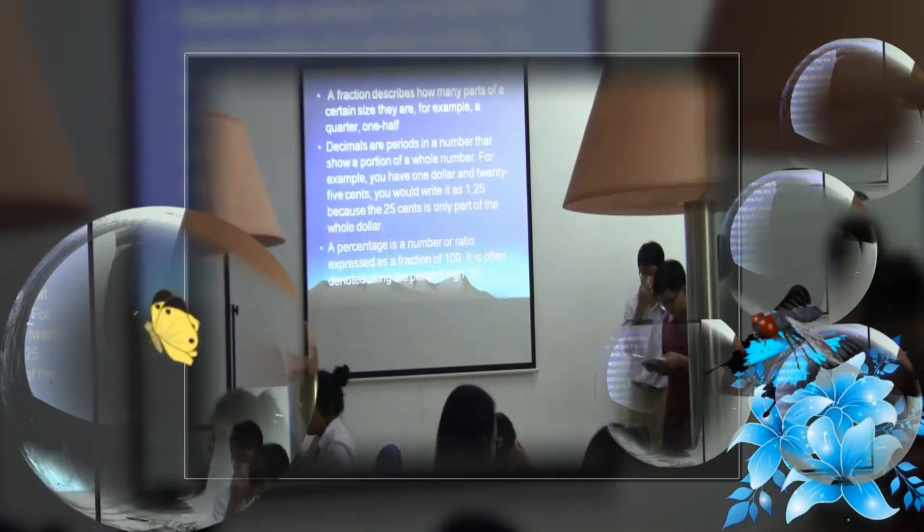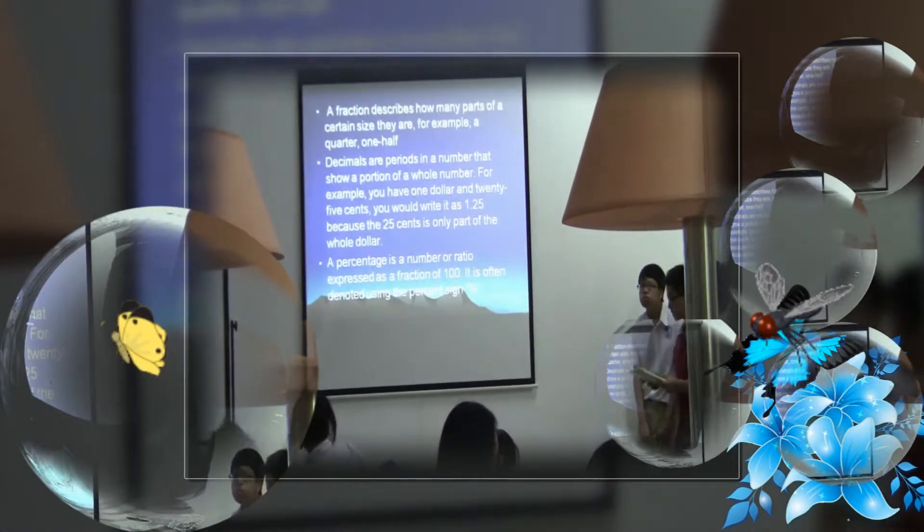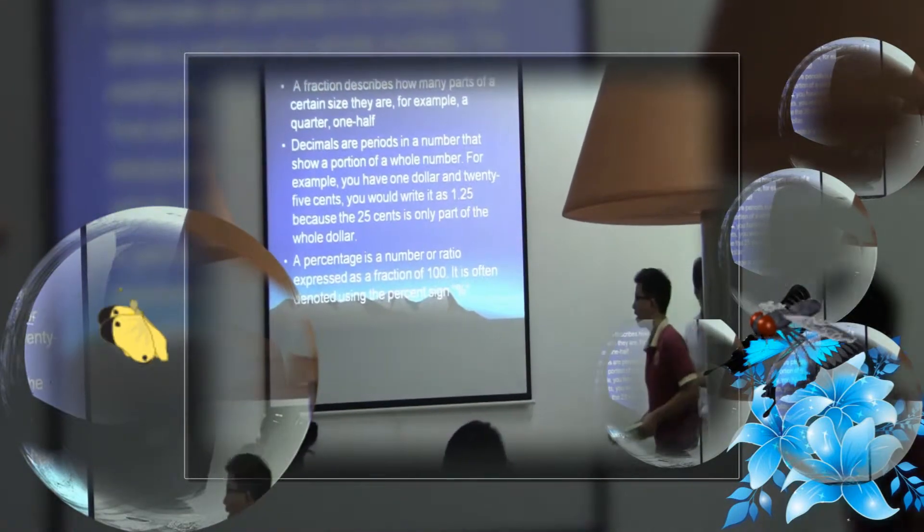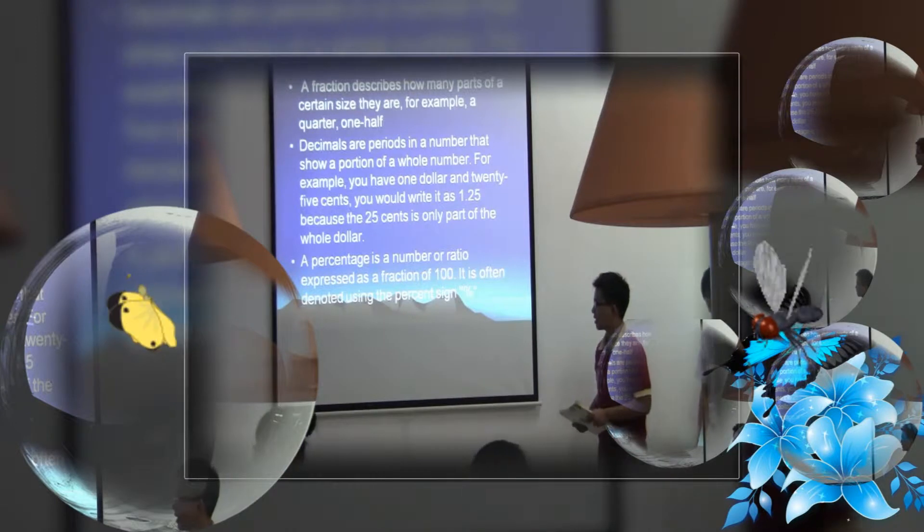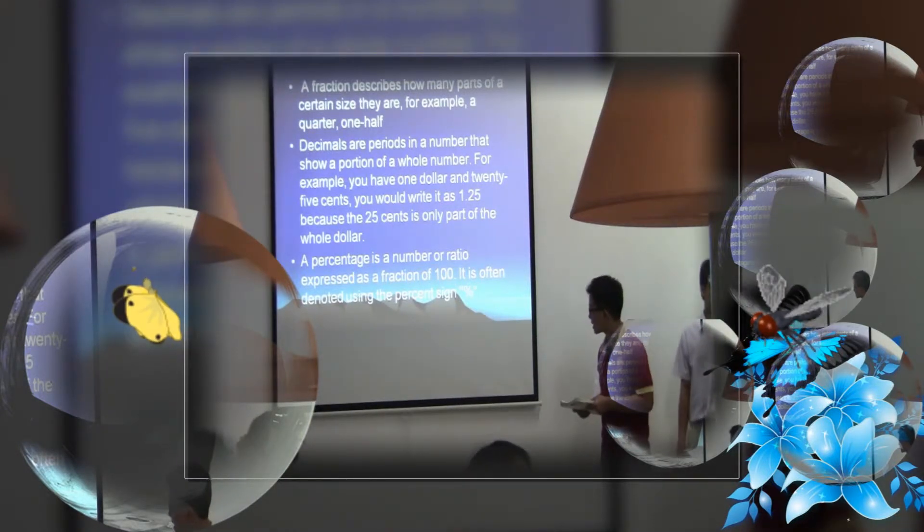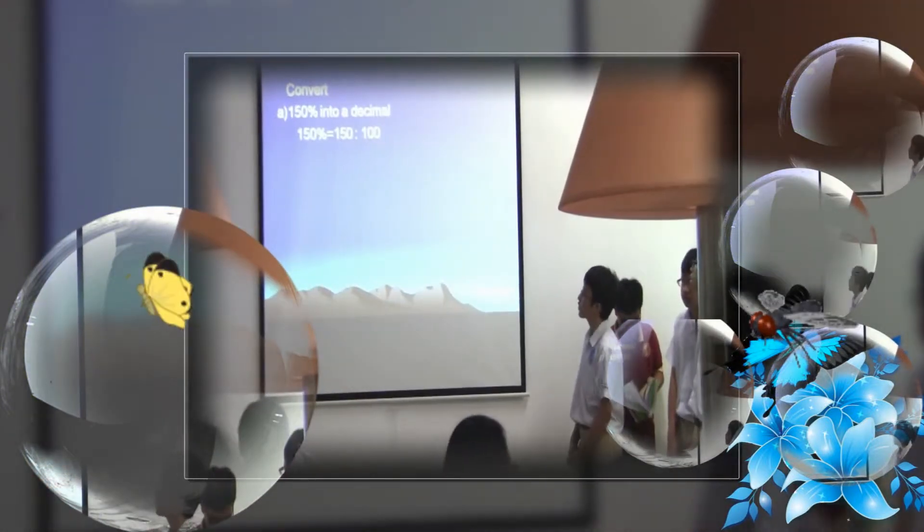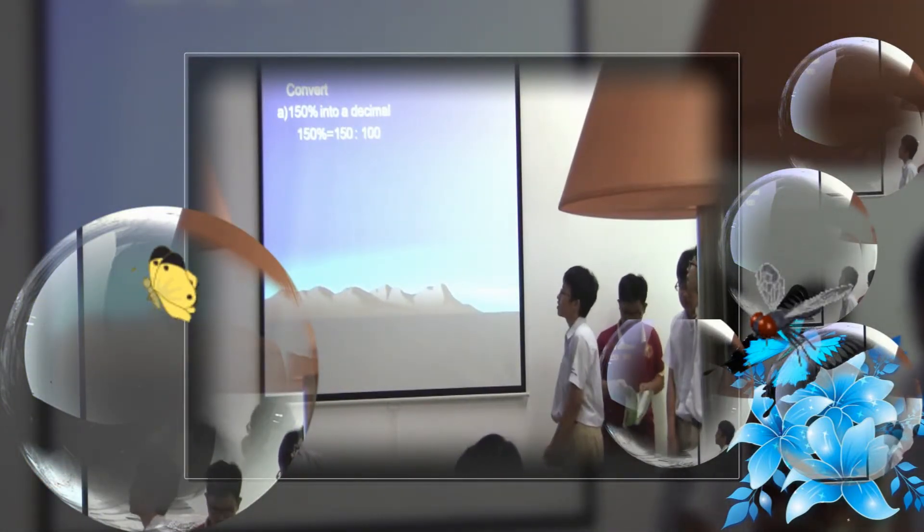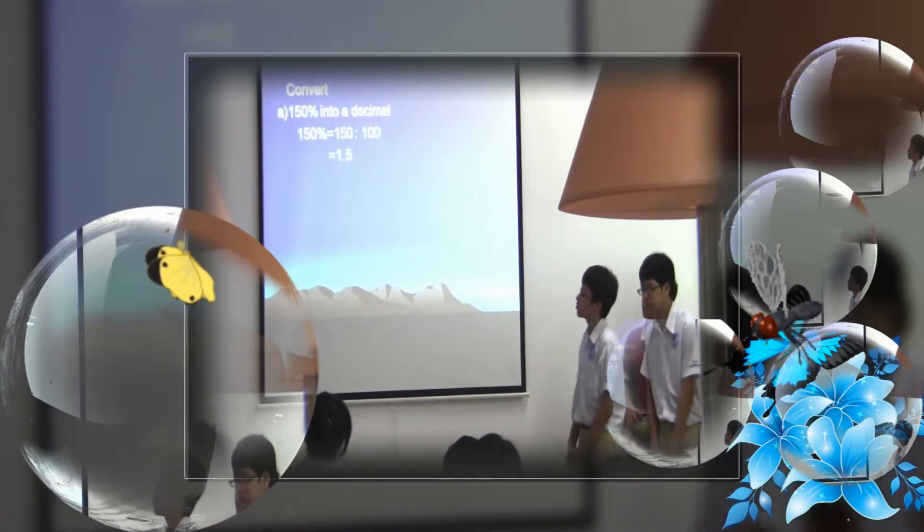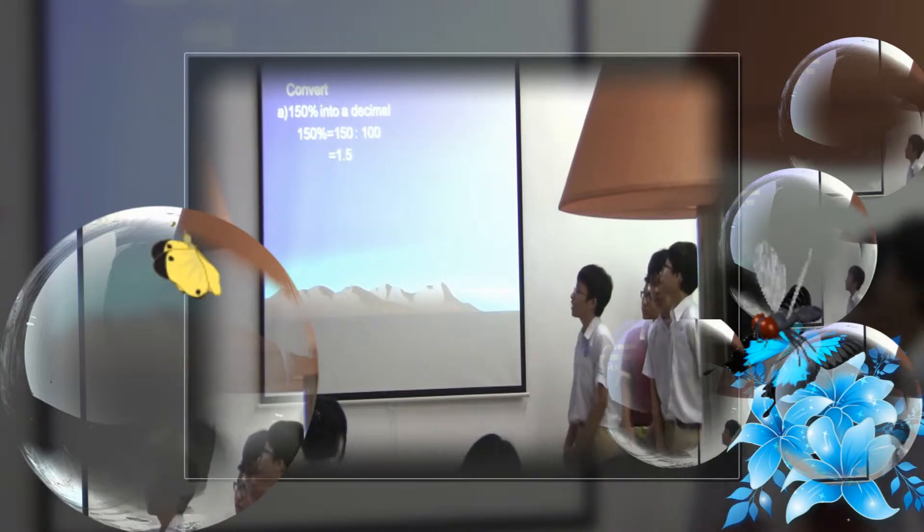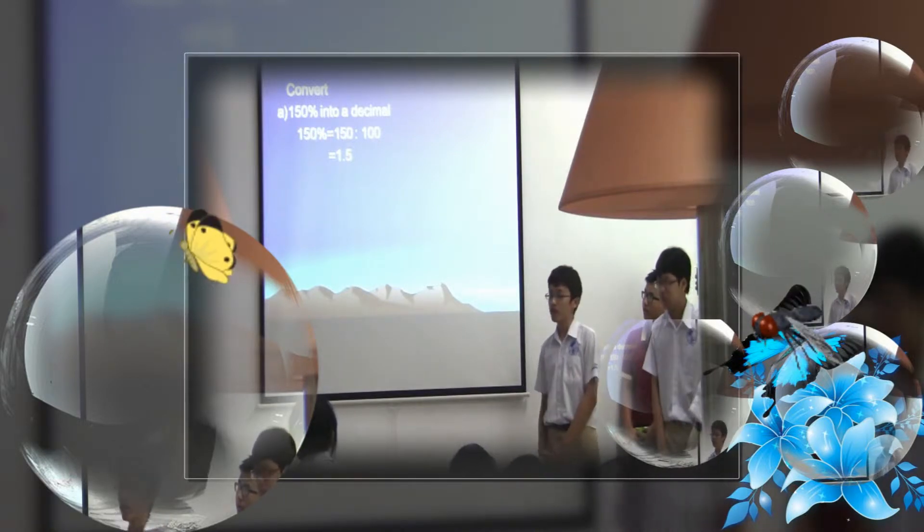A percentage is a number of parts or ratios expressed as a fraction of 100. If you know using the percentage sign numbers, you can do something like this. It's out of 100. The percentage sign represents 100.